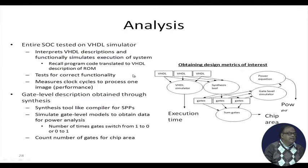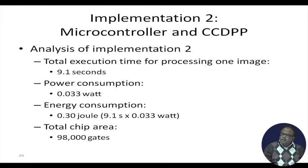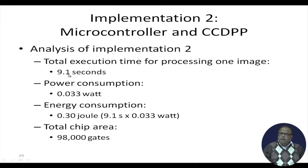Analyzing the second implementation, the total execution time for processing one image is 9.1 seconds — not meeting the 1-second requirement — even after dedicating a separate processing module for preprocessing. Power consumption is 0.33 watt, energy consumption is 0.3 joule, and total chip area is 98,000 gates — still within the 200,000 gate limit. So we can add more hardware to make processing faster.